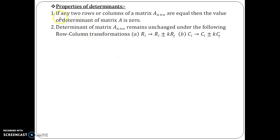So, we are going for the properties of the determinants. We already know that if any two rows or columns of a matrix are equal and if you calculate the determinant of that matrix, then that determinant is going to be zero.